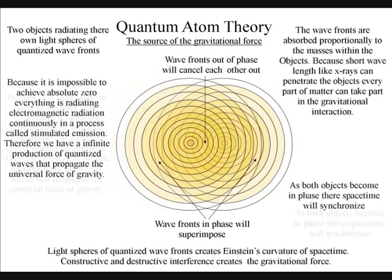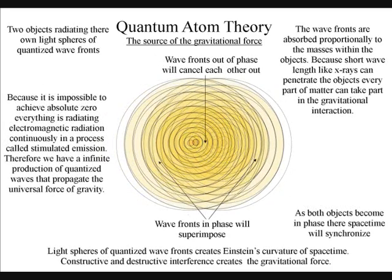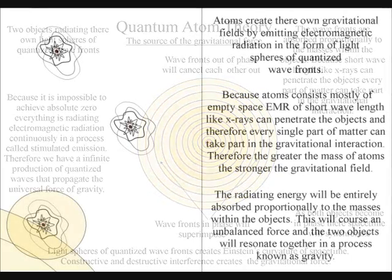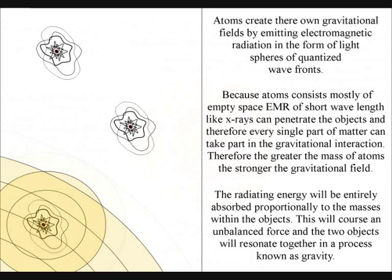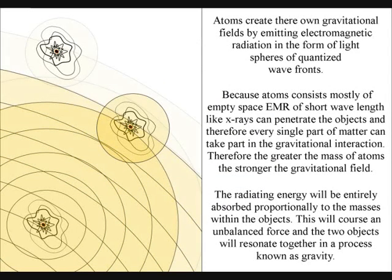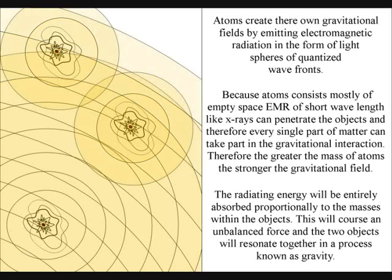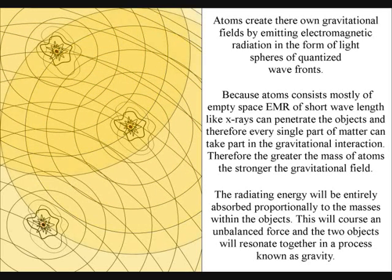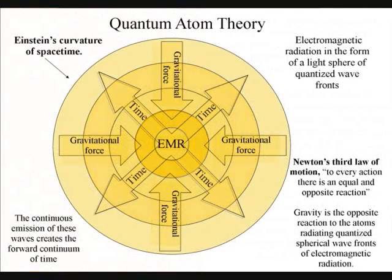Because atoms consist mostly of empty space, electromagnetic radiation of short waves, like x-rays, can penetrate the object. Therefore, every single part of matter can take part in the gravitational interaction. The gravitational field will propagate at the same speed that the electromagnetic radiation moves, the speed of light.